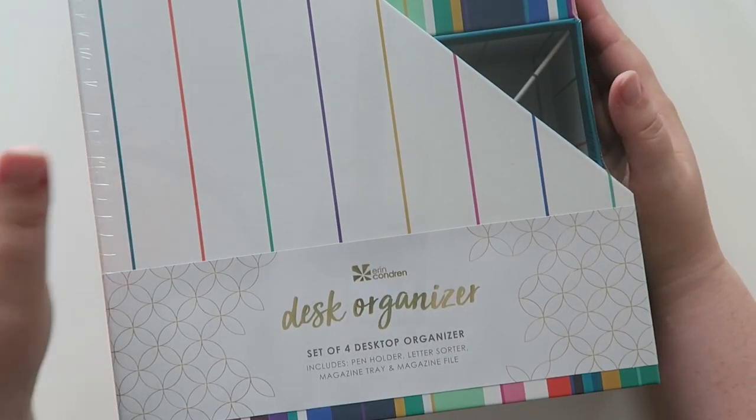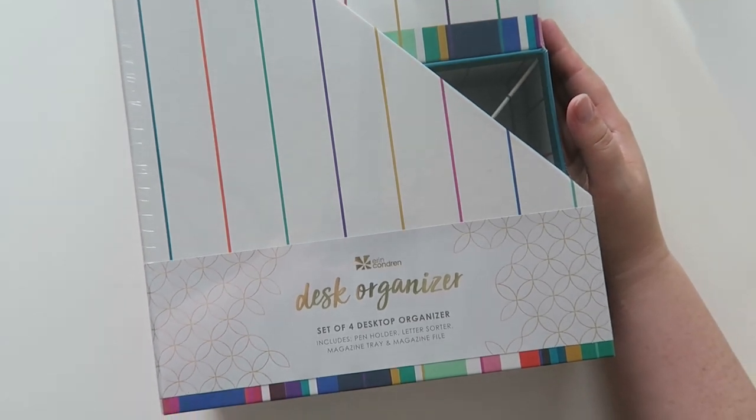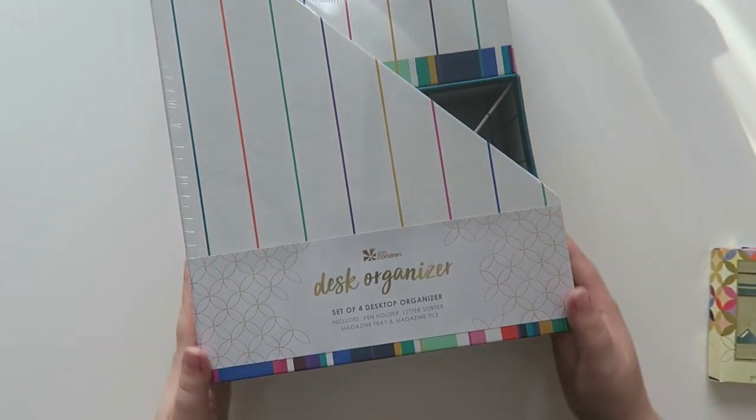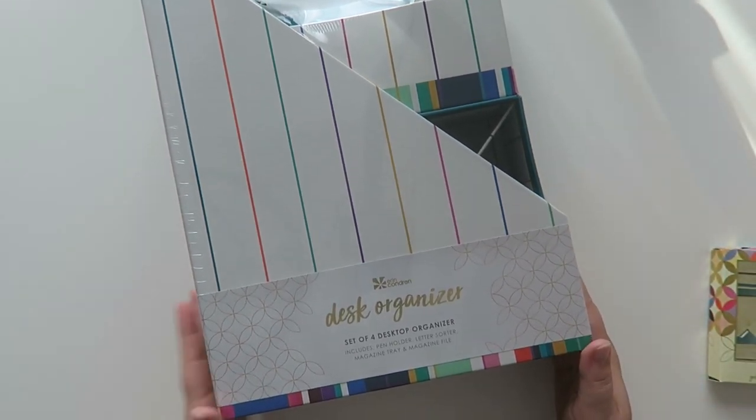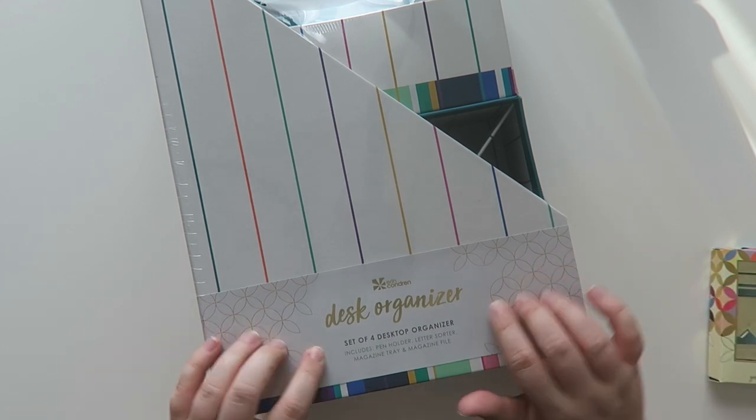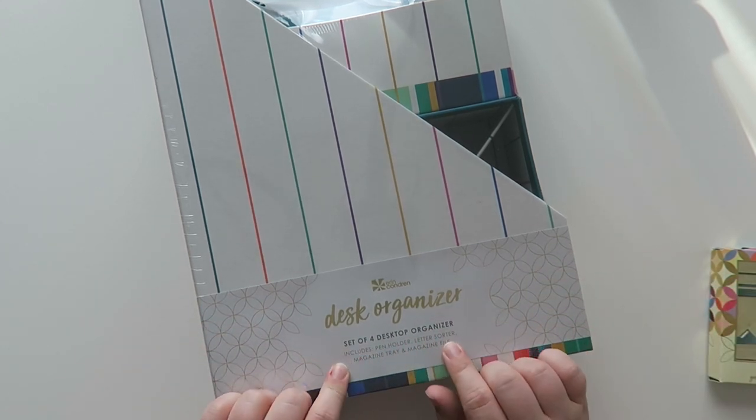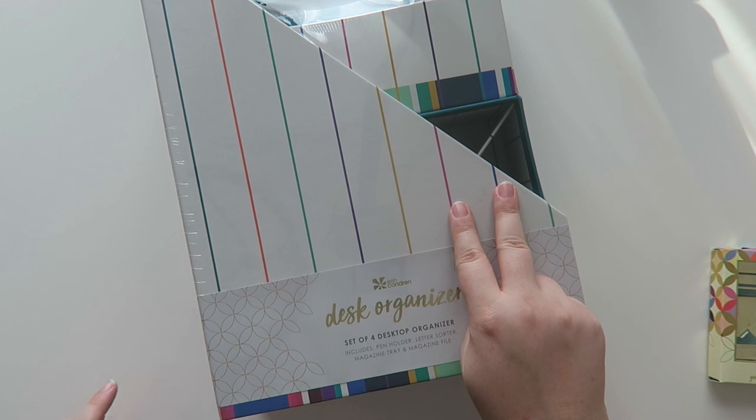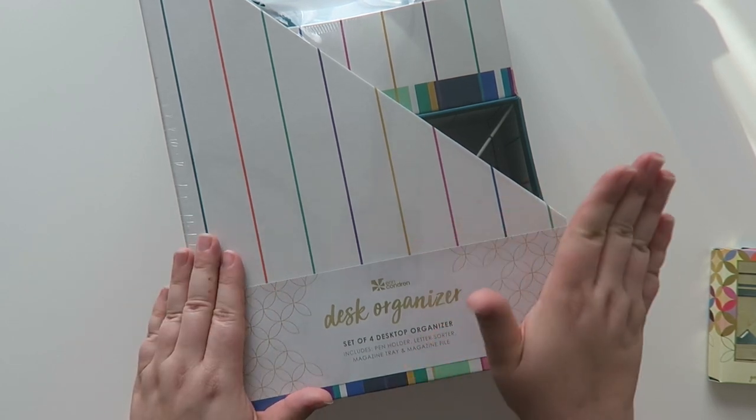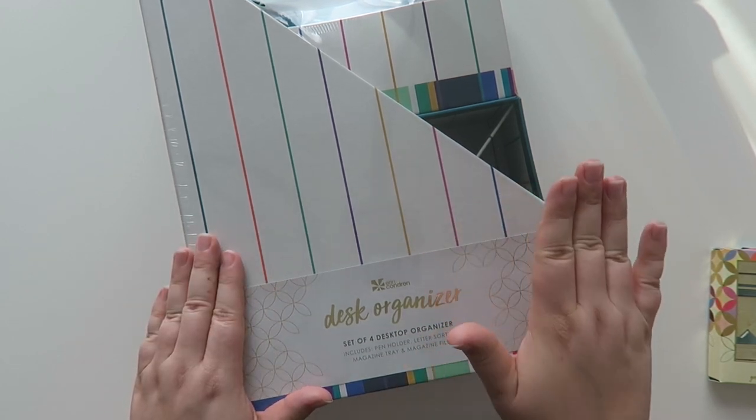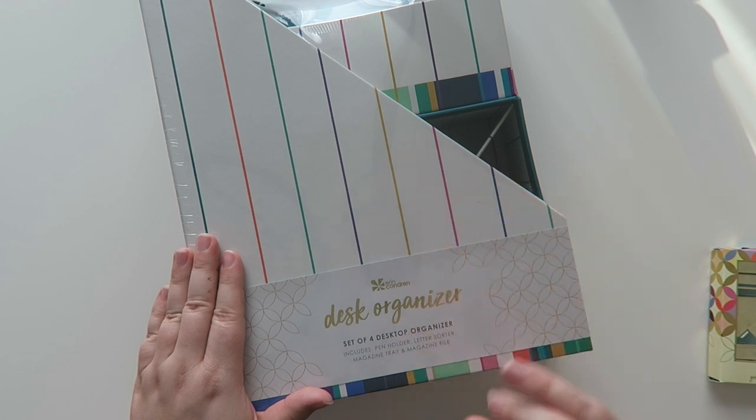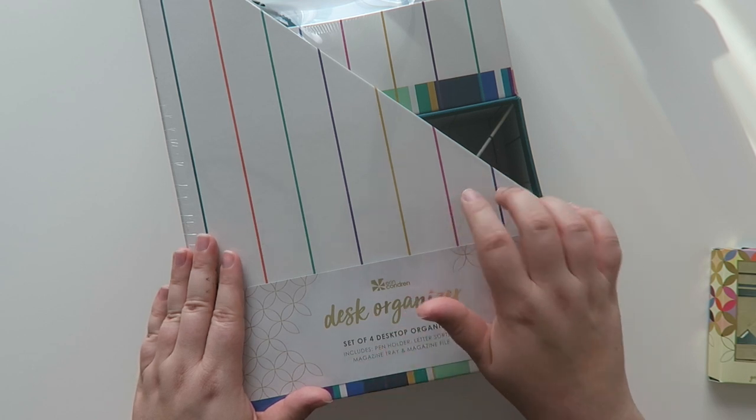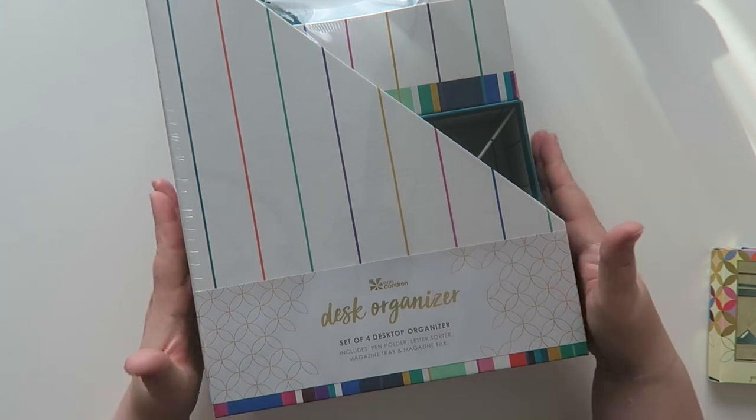All right so the first thing I want to talk about is this bad boy. Oh my gosh doesn't even fit in the frame. This is as zoomed out as I can get y'all. Okay so this is the desk organizer. It's the set of four desktop organizer. Includes a pen holder, letter sorter, magazine tray, and a magazine file. There are two different designs. There's the kaleidoscope which is beautiful and it only comes in the colorful. It does not come in a neutral. And then this is the retro stripes and these retail for $26.